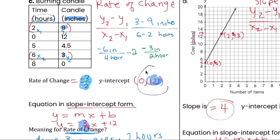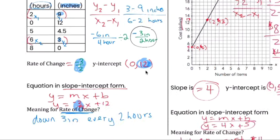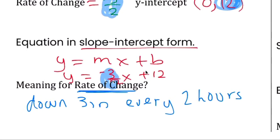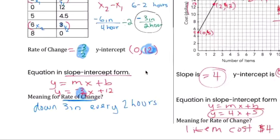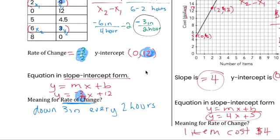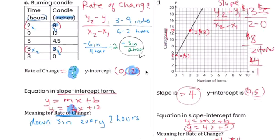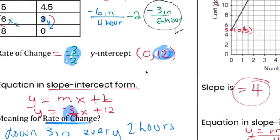Notice I explained what the answer means at the bottom here. That's the y-intercept right here. Three down, down three inches every two hours. The candle burns down three inches every two hours.